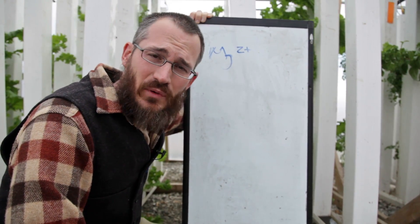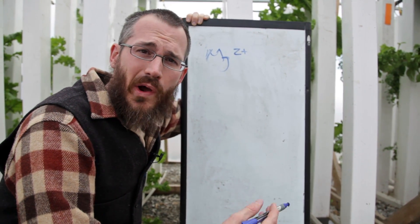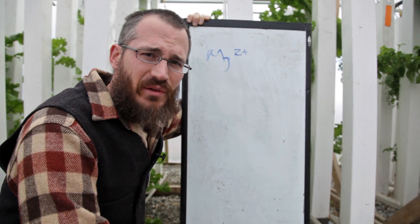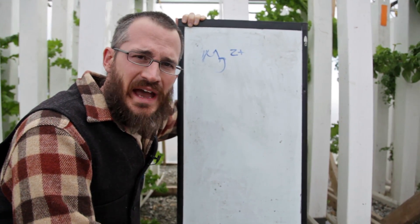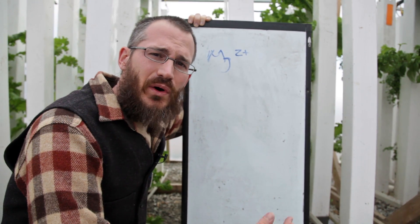Magnesium is mobile in the plant, which basically means that as the plant needs magnesium in the growing parts of the plant, it can kind of scavenge it from older parts of the plant. So oftentimes when we start to see magnesium deficiency, it shows up in the older leaves.